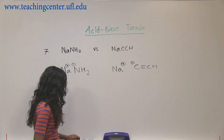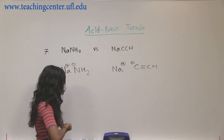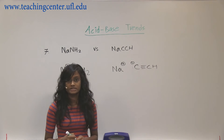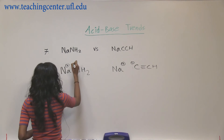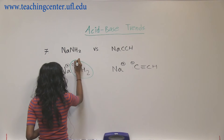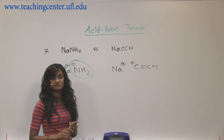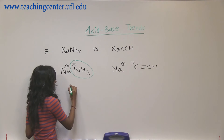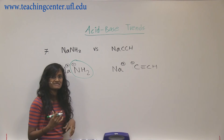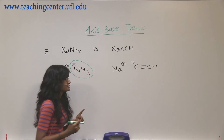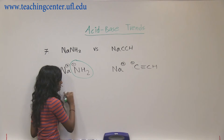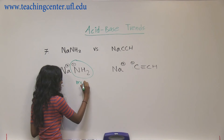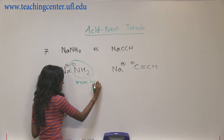So in comparison of those two, they're asking about what is more acidic. NaNH2 is a very, very strong base — amines are number one bases — so it's going to grab the first proton you find. So NaNH2 is more basic.